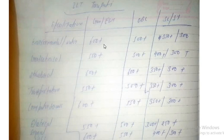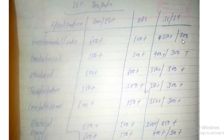Now for Environmental Engineering: if you want to apply, 600 plus gate score is needed. For Water Resources, same — 600 plus for general, 500 plus for OBC, 350 plus for SC/ST, and 300 for other categories. This is not an exact guaranteed cutoff, but if your gate score is 600 plus you can take a chance. Last year students around 620 to 630 got Environmental and Water Resources.